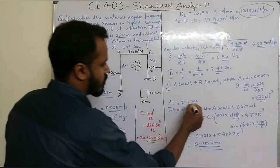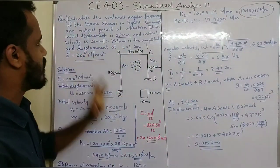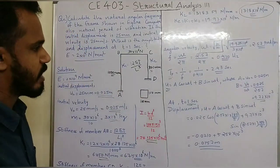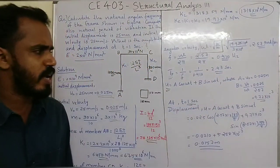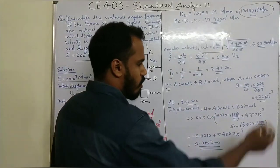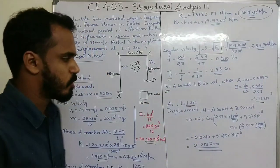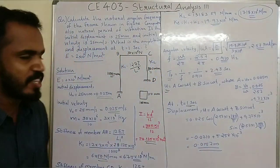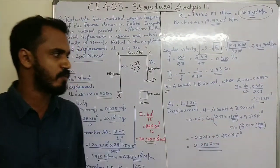At t equal to 1 second, what is the amplitude and displacement? Displacement is equal to A cos(ωt) plus B sin(ωt). Substituting the A value, B value, and omega value, the displacement is equal to 0.0157 meters.